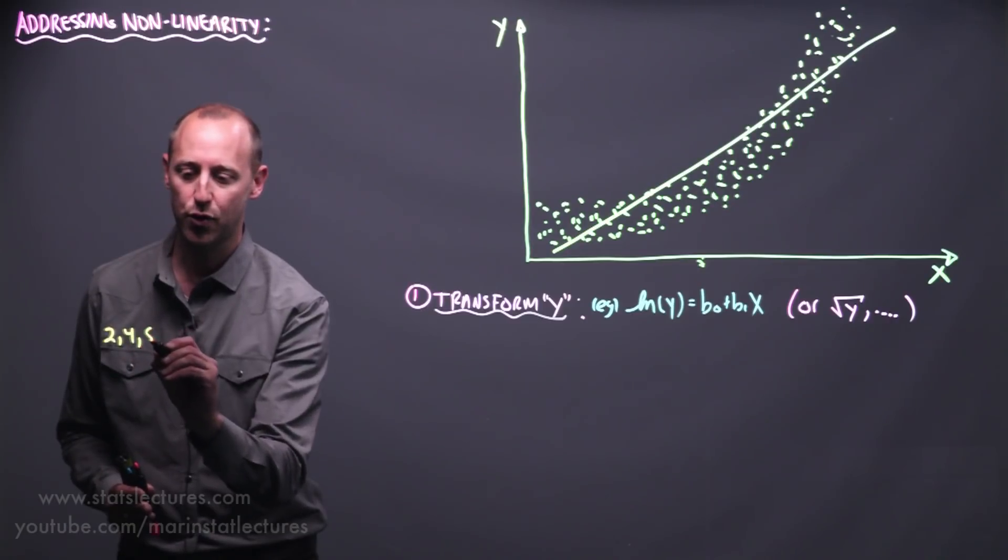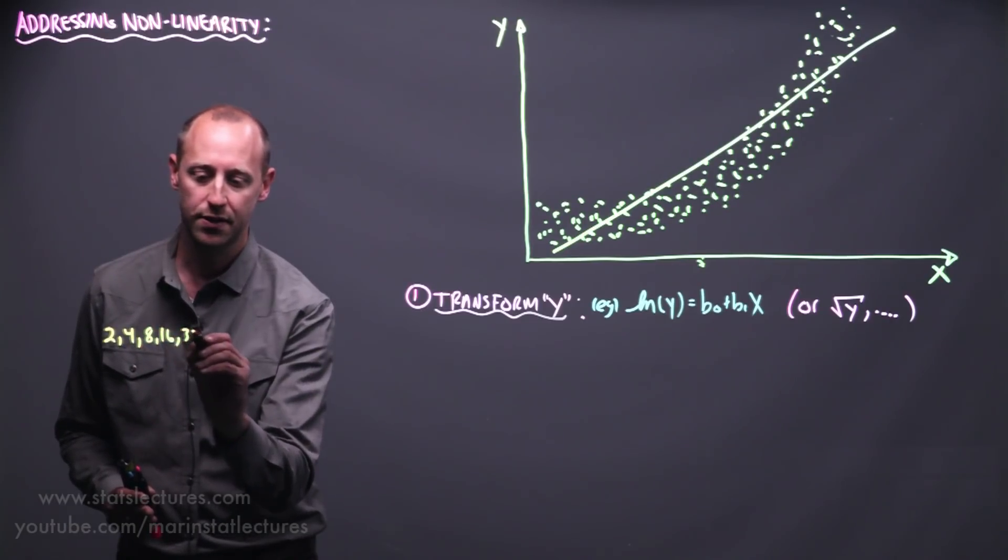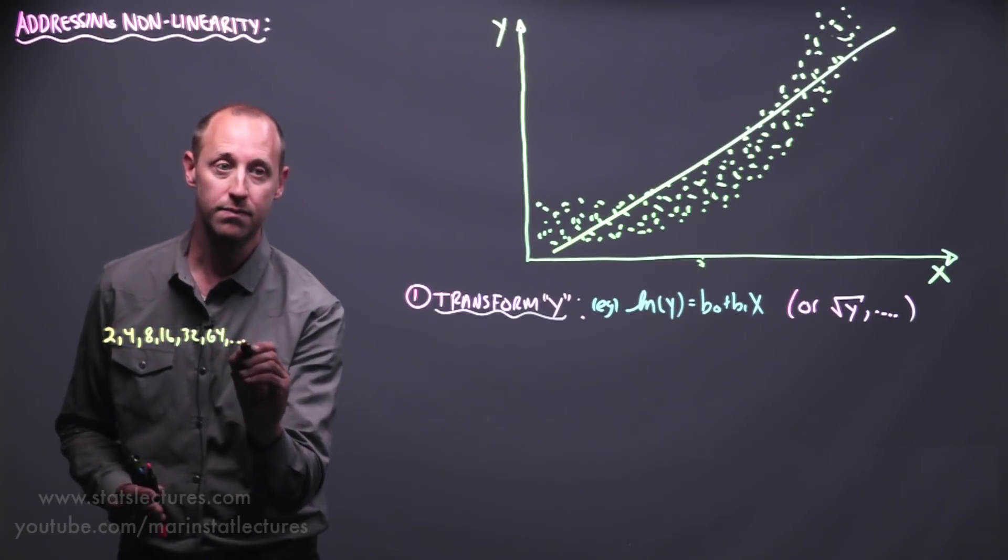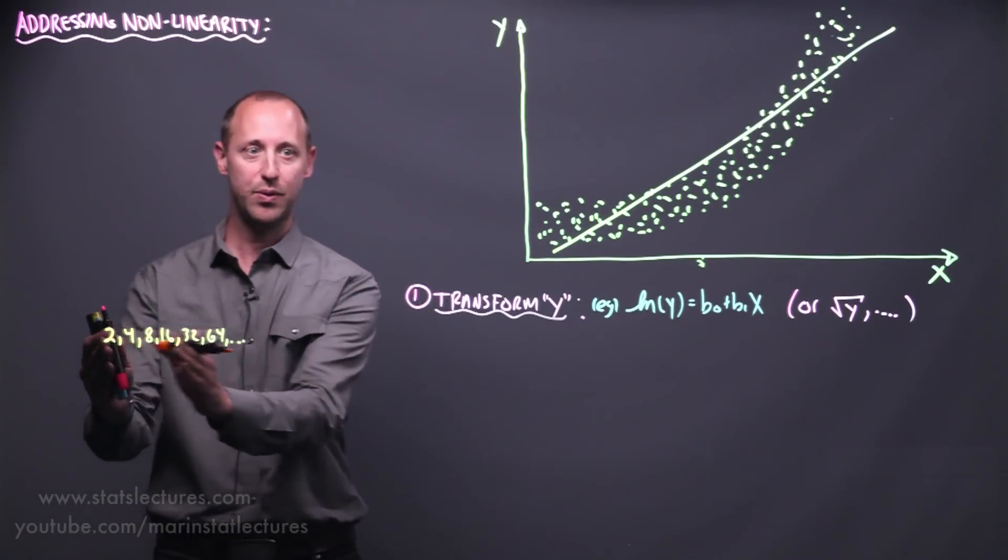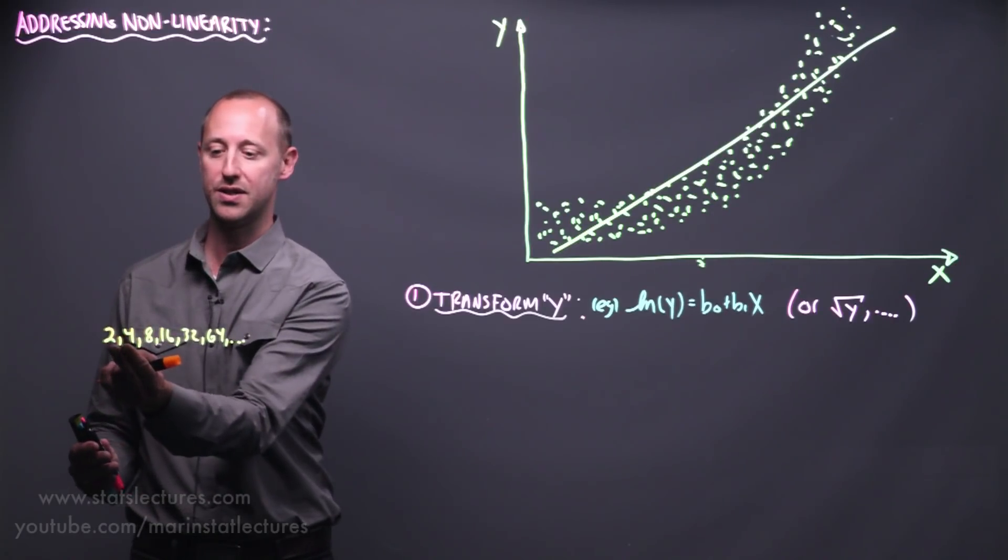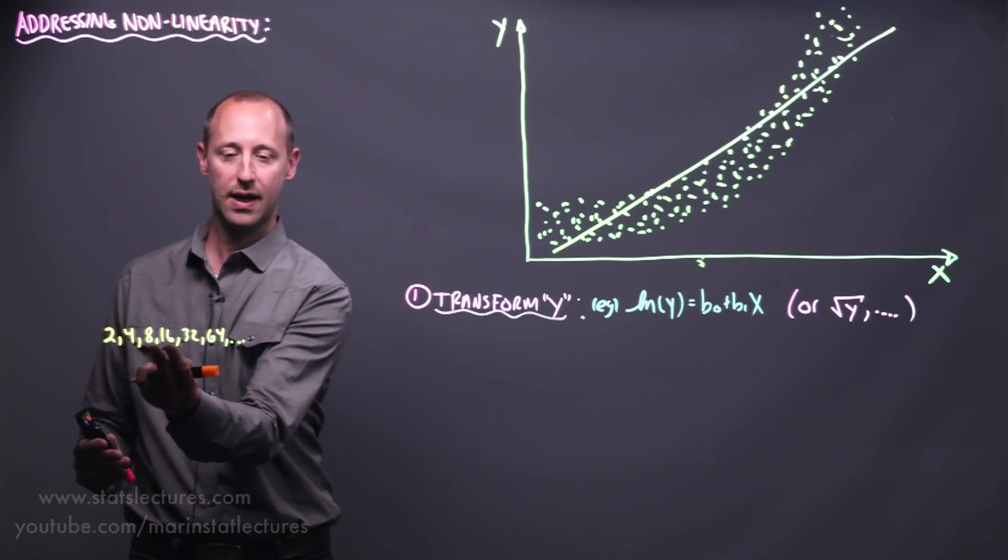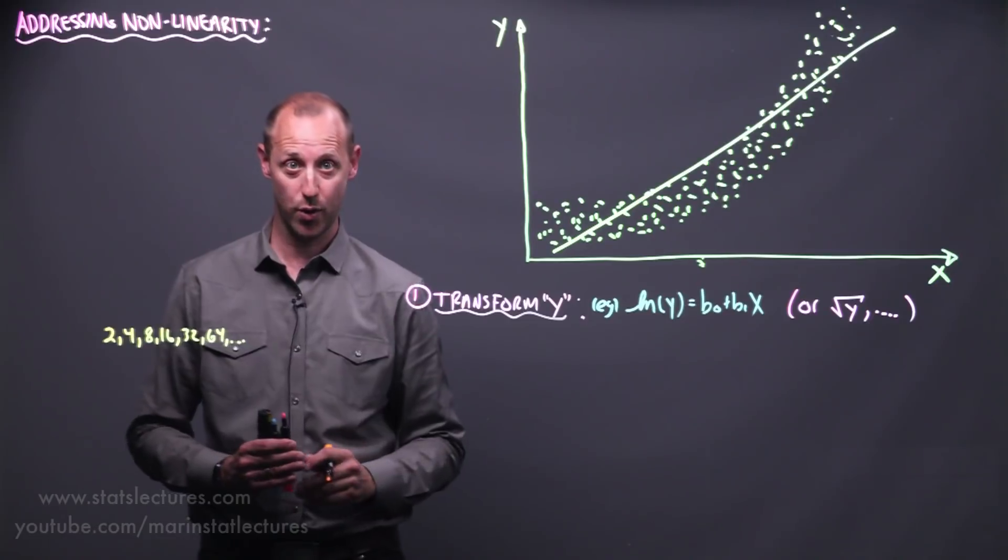Consider values of 2, 4, 8, 16, 32, 64, and so on. On an additive scale, the distance between each number is growing. There's a distance of 2 between these, then a distance of 4, then 8, then 16, and so on, growing.